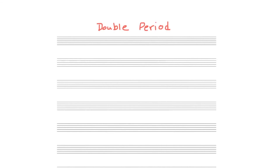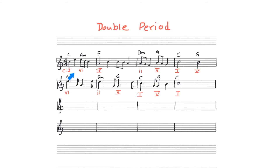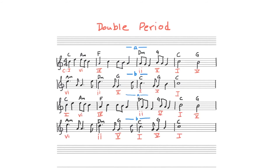Our final type of period form is known as a double period. This is a four-phrase form that can easily be developed from a contrasting period. Here is the contrasting period that was composed in the previous slide. This first phrase, since it is the first phrase of the form, can be labeled with a small a. This second phrase, since it is a new idea, can be labeled with a small b. The typical double period form will actually repeat these two phrases for another a. However, what we have written here is simply two contrasting periods — the first contrasting period followed by the second contrasting period, and they happen to be identical.